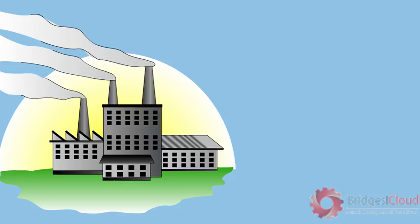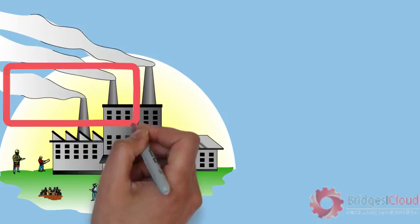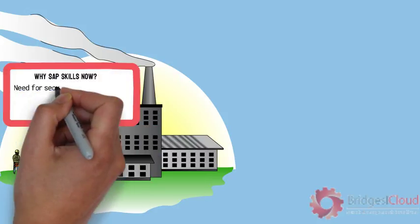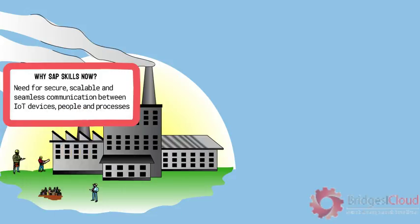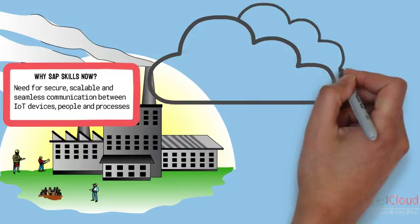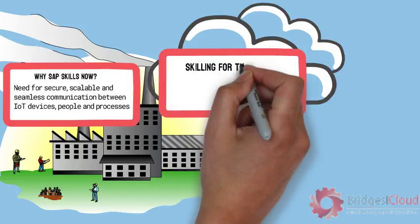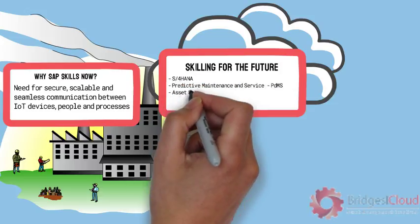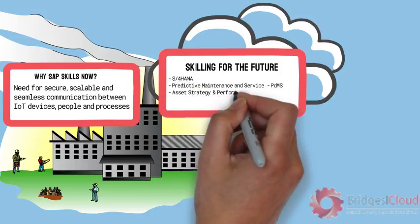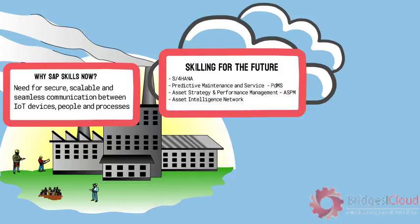As businesses evolve, there is an ever-increasing need for seamless, secure, and scalable communication between devices, processes, and people. The sudden rise of cloud computing and the Internet of Things have pushed organizations towards adoption of cloud solutions. SAP leads in this space with next-generation business transformation solutions such as predictive maintenance and service, asset strategy and performance management, and asset intelligence network, among many others.